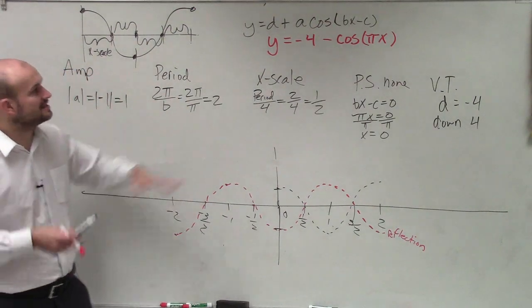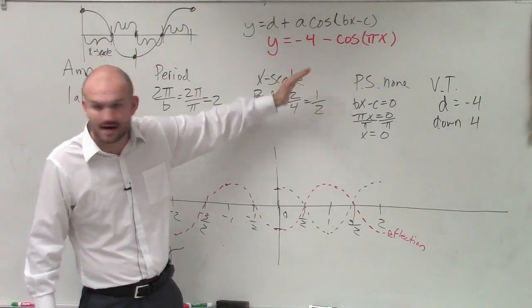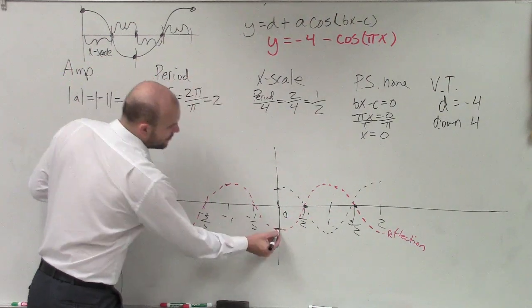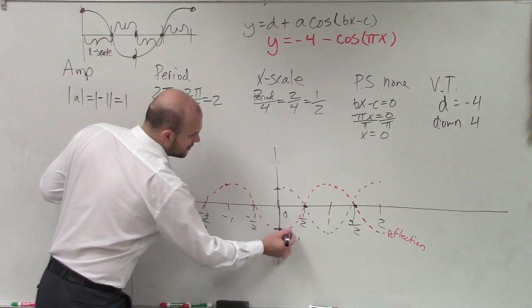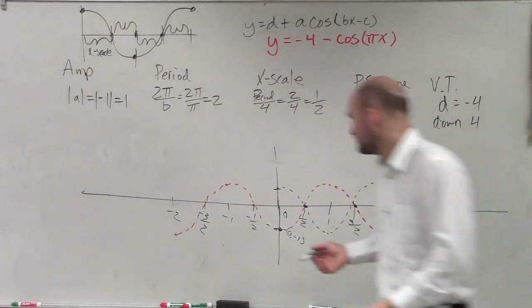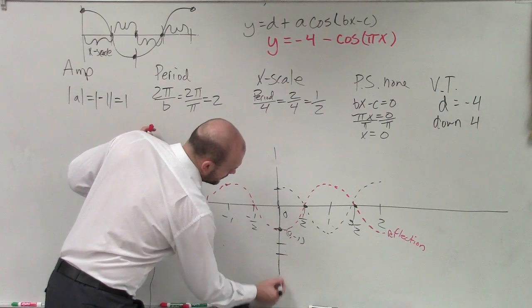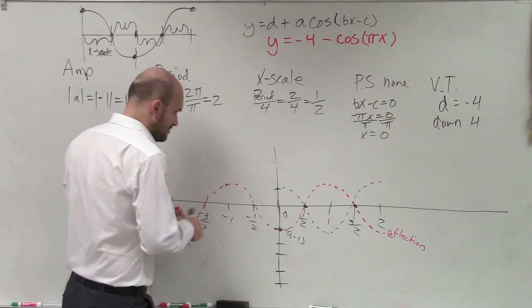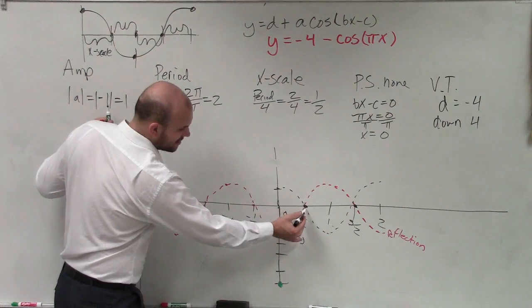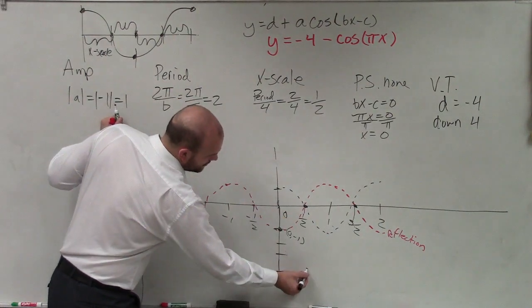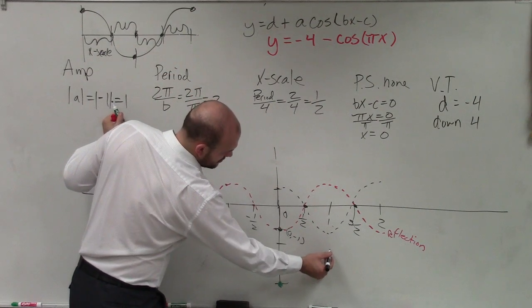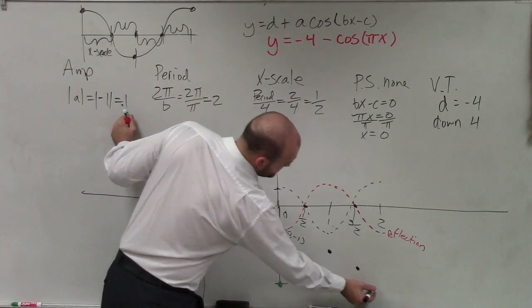The last thing is the translation — shifting four units down. I'm going to look at what each one of these points is. Here, that point is at (0, 1). If I transform this four down, instead of that point being at (0, 1), it's now going to be at (0, negative 5). So this point is now going to be at (0, negative 4), this point at (0, negative 3), this one back down at negative 4, and that one at negative 5.